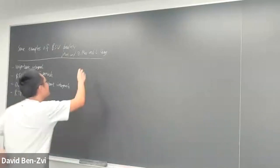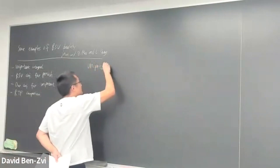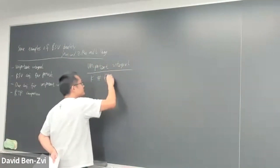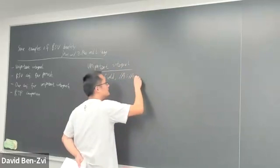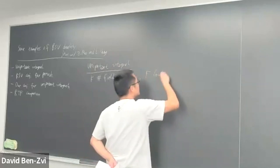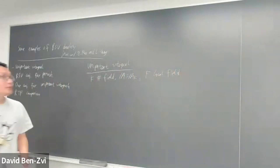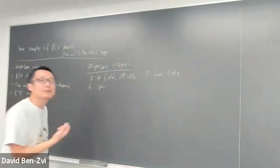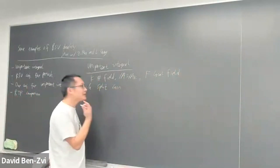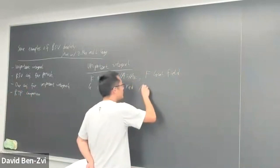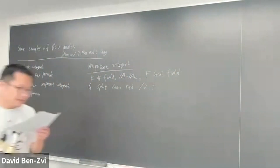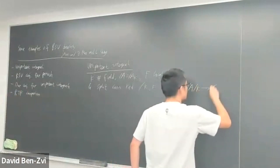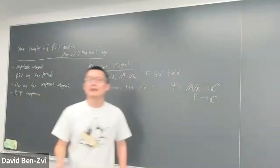We start with the unipotent integrals. Here G is a number field, A is the adele ring, and F is a local field. The framework only covers the split group, so we assume G is split. All the groups in this talk are split connected reductive, either defined over K or defined over F, but most over K. I'll fix an additive character of the ground field.